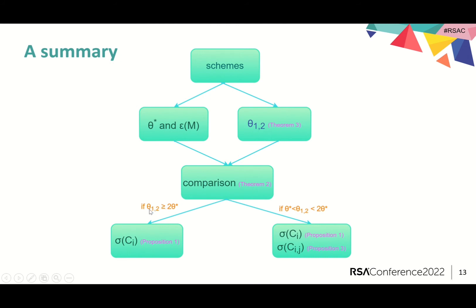Then, if theta_{1,2} is larger than 2 theta star, caps about different queries will be disjoint with the overwhelming probability. We can use Proposition 1 to calculate the proportion of the surface area of each cap. Multiply that by the number of caps, the proportion of excluded key candidates can be obtained with some probability.